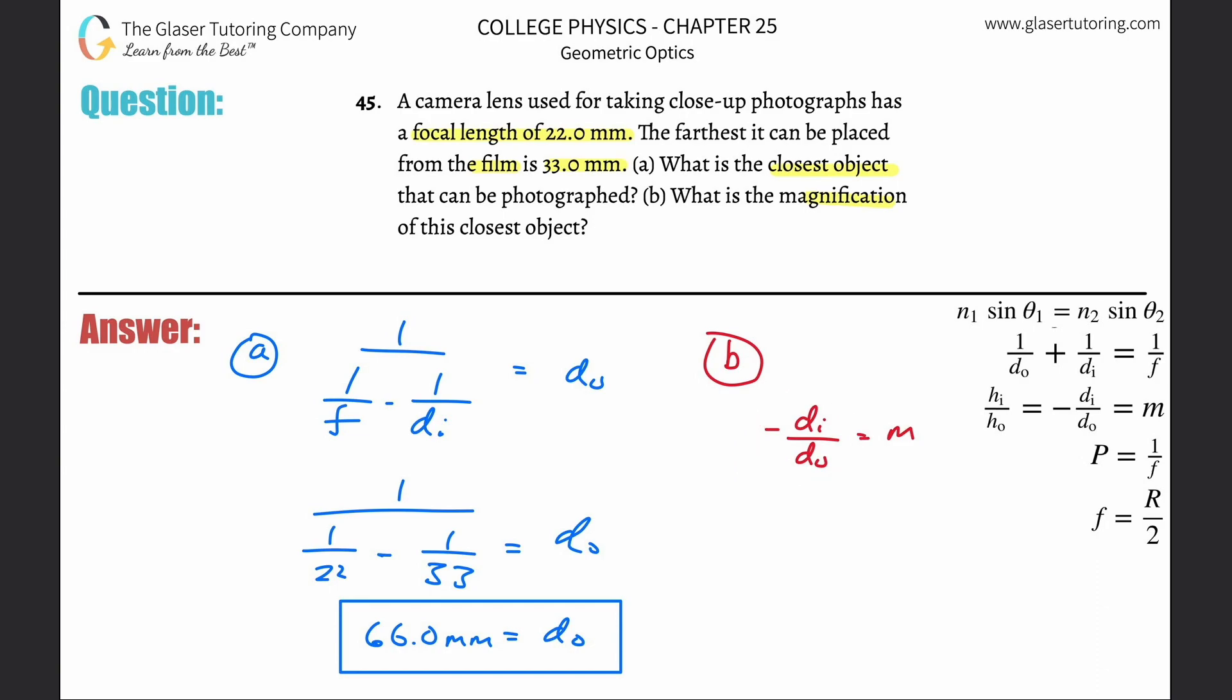I'm going to plug in the values di and do. This is a fraction, so you can leave these all in the same units. We'll take di, the image distance, which was 33, and make sure they're all in millimeters. The object distance was 66.